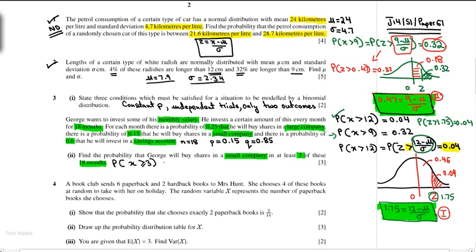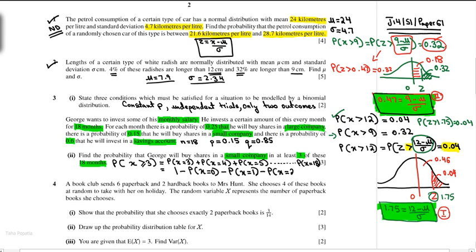One way to calculate P(X ≥ 3) is to compute P(X=3) + P(X=4) + ... + P(X=18) and add them up. The other method is to use the complement: 1 minus [P(X=0) + P(X=1) + P(X=2)]. You can use this second method — let's see how the question is solved that way.